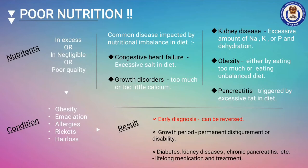From our nutrition topic, we can conclude three major points. First, a balanced diet is of utmost importance for your companion. Second, the body needs a fixed proportion of nutrition in the diet. Third, diet proportion varies with the individual.